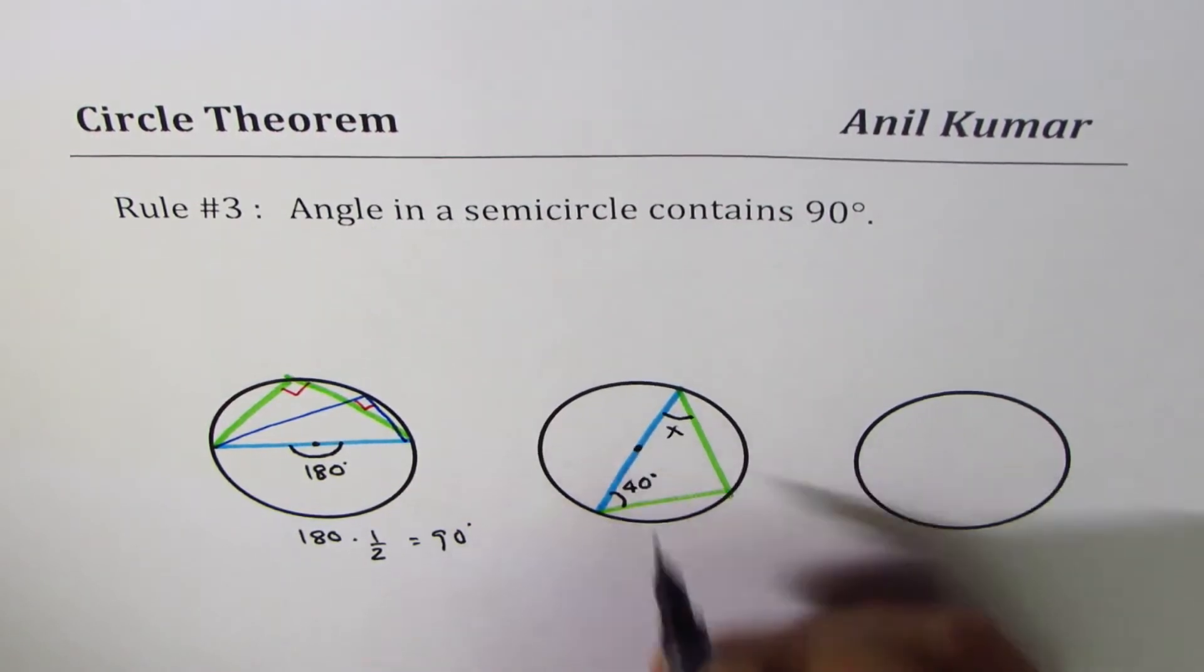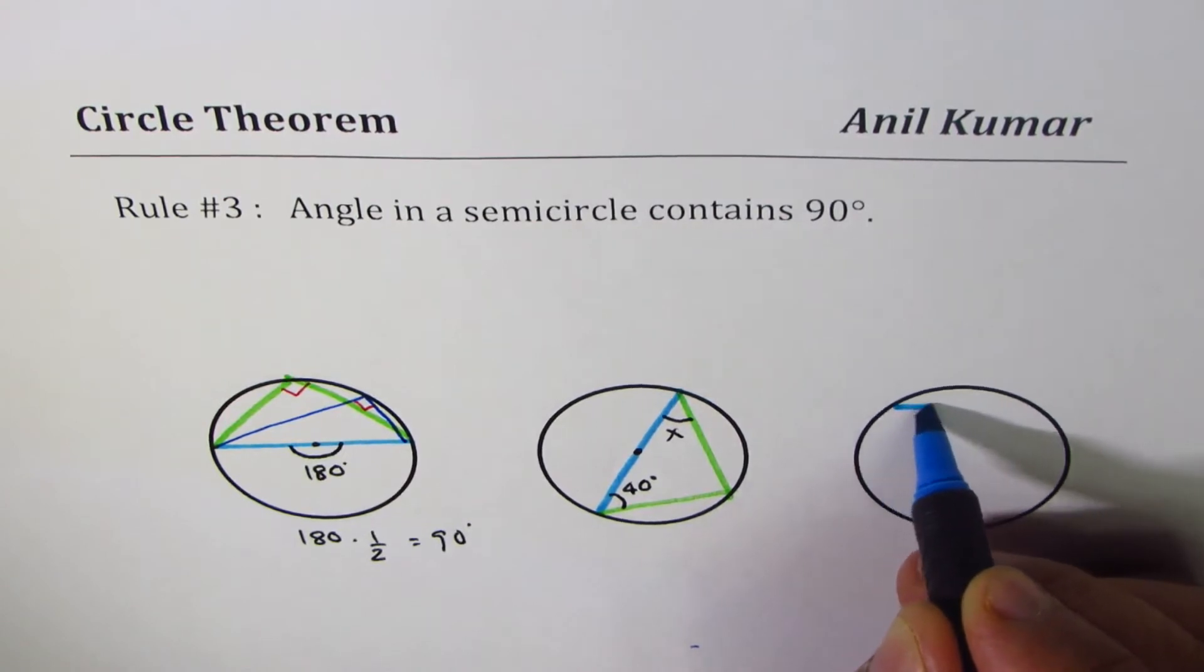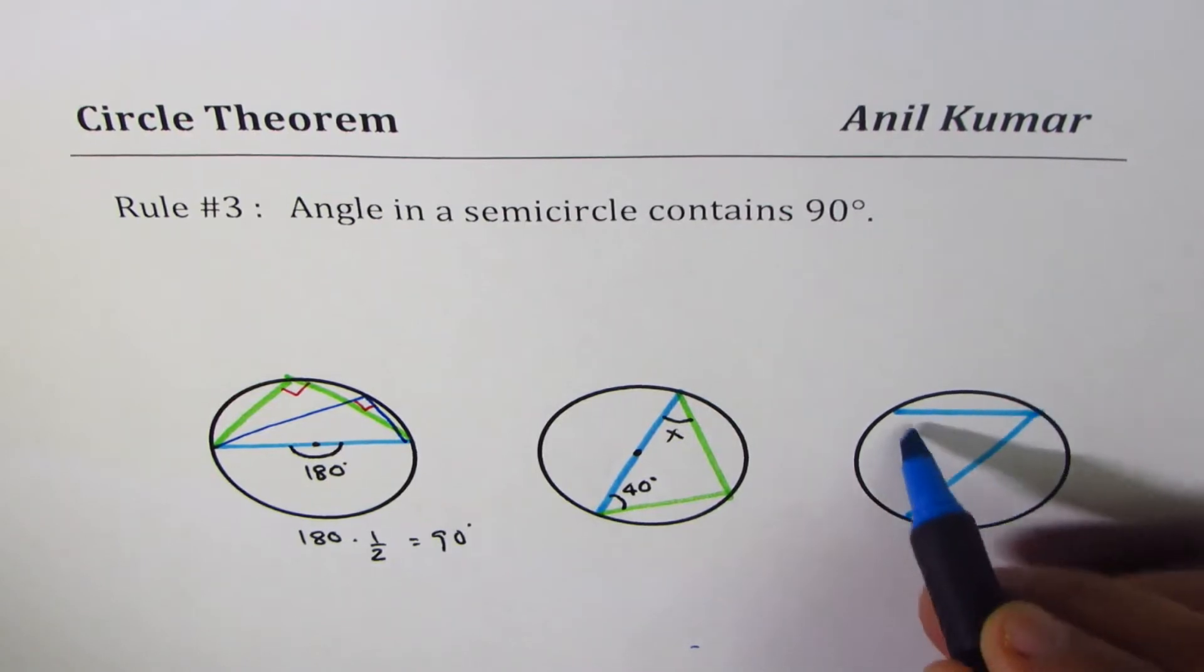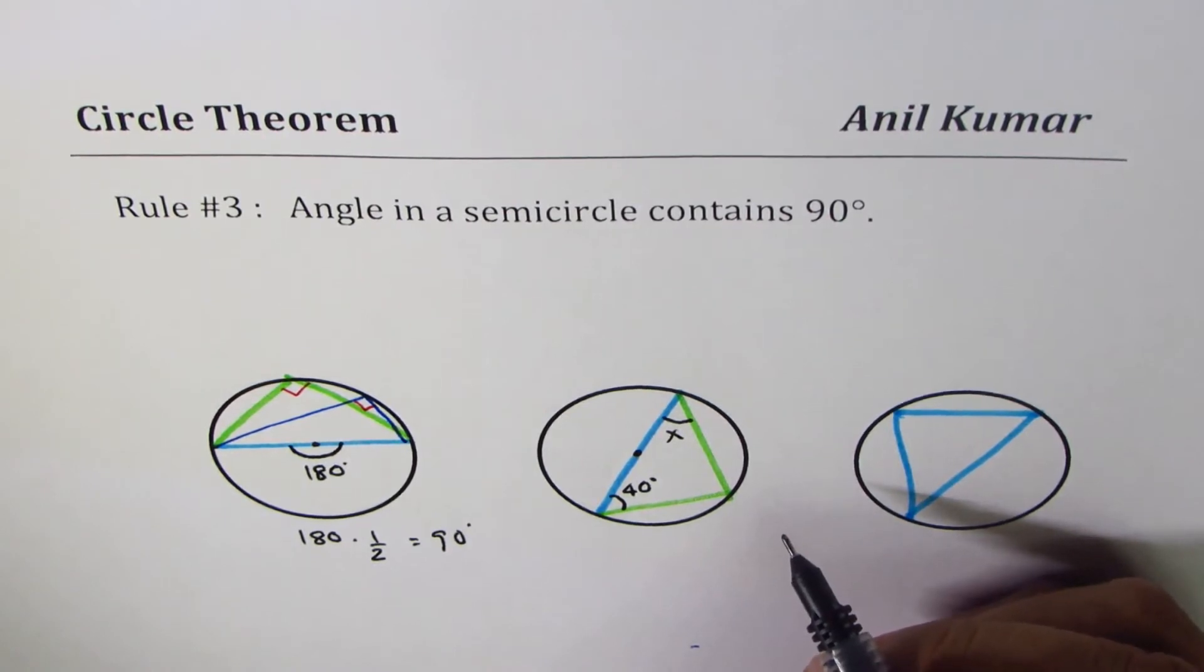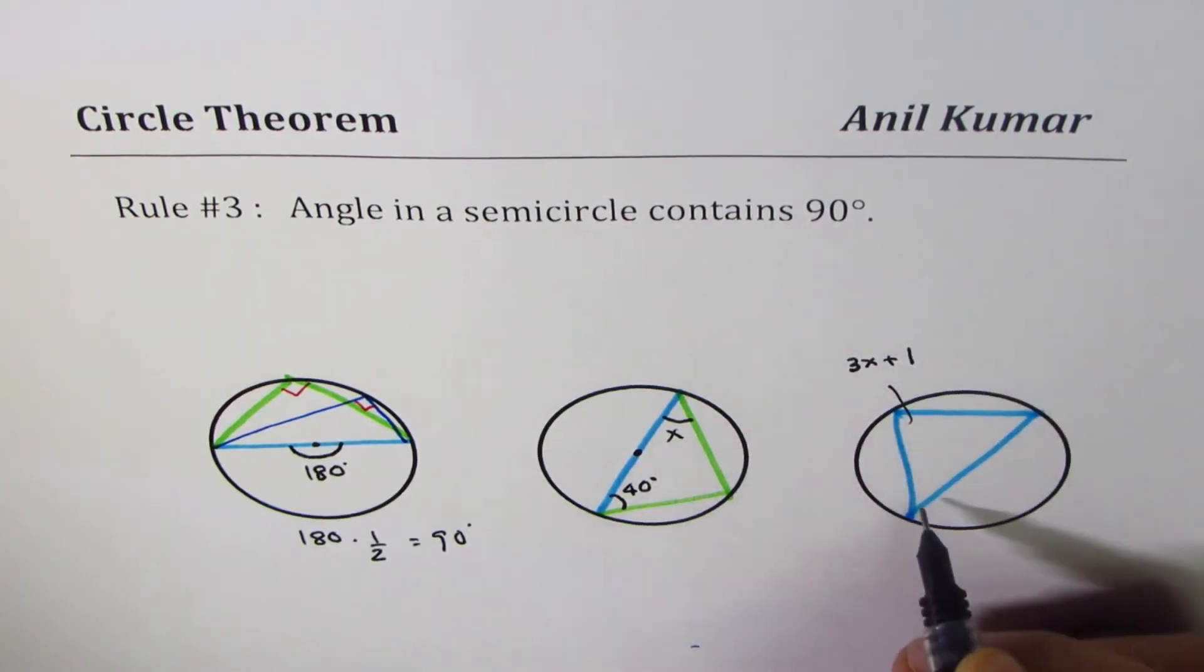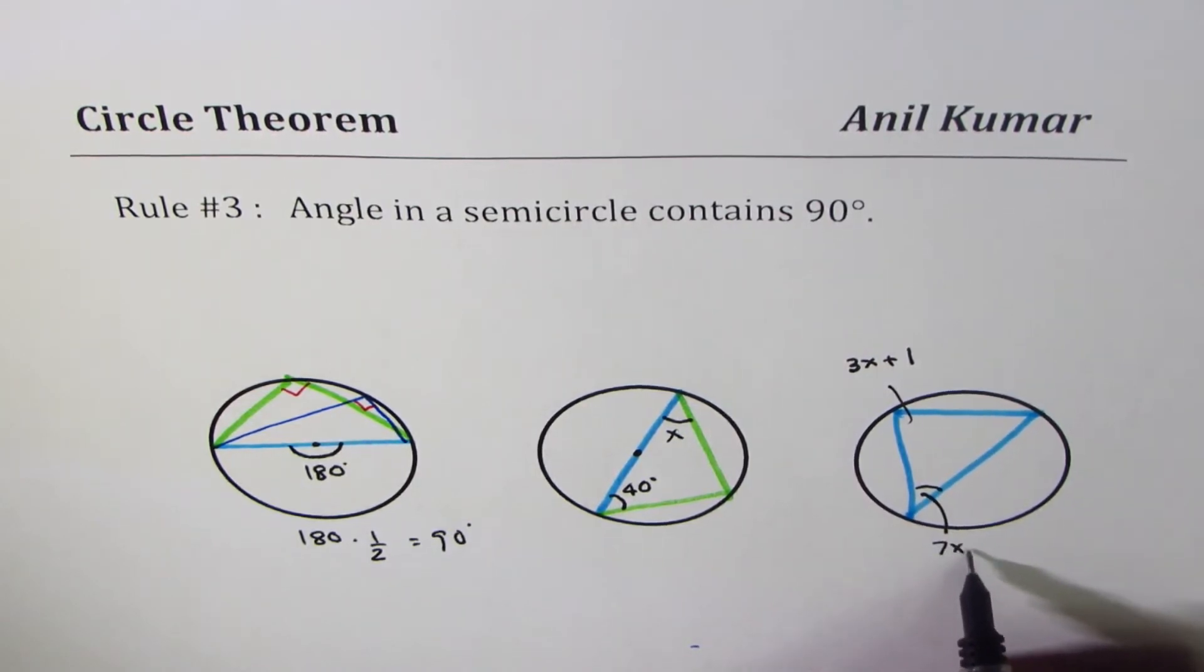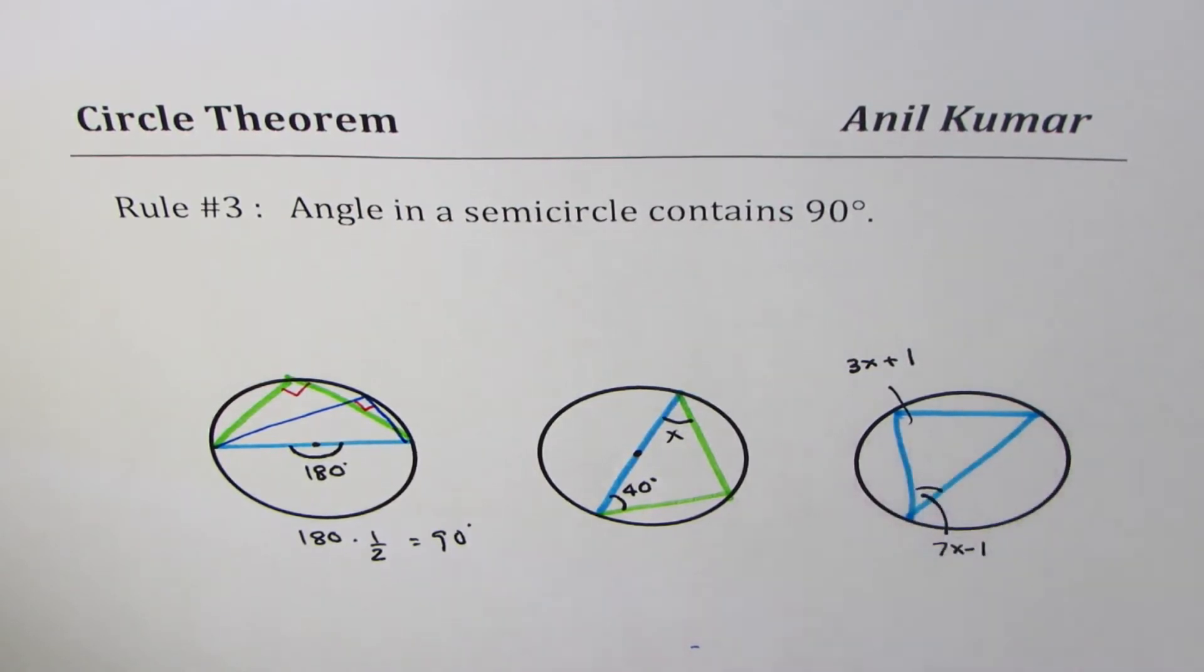Another question for you: let's consider this triangle that goes through the diagonal. So here we have a right triangle. If one of the angles is 3x plus 1 and the other angle is 7x minus 1, you need to find these angles. So these are questions for you to practice.